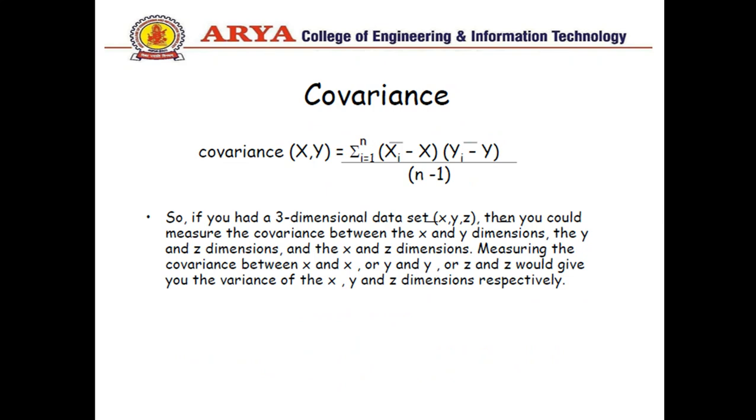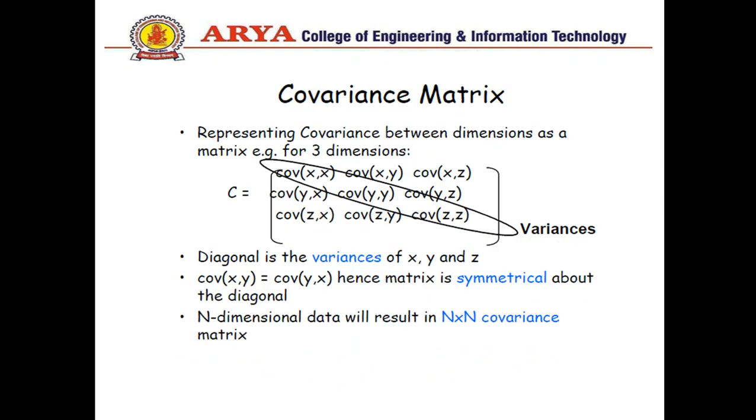In case if we have three dimensional data set there will be a matrix of 3 by 3 in respect of covariance. So it can be shown as covariance of x,x in reference of x, covariance of x,y, covariance of x,z. In the same manner for y and z. Here we can see one thing that is the symmetry. There is no need to calculate symmetric elements again and again. For example if we calculate y comma x it will be same for x comma y.